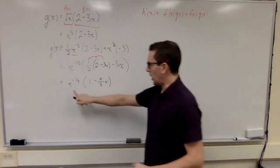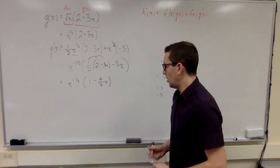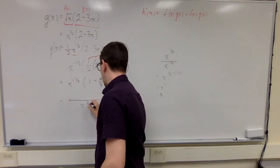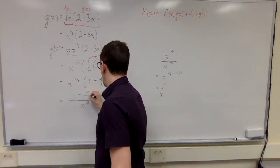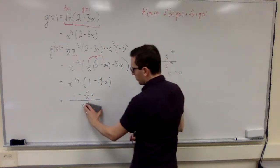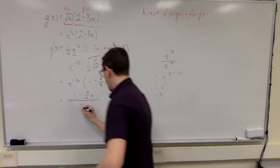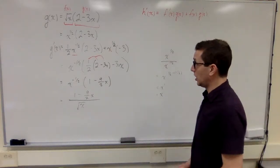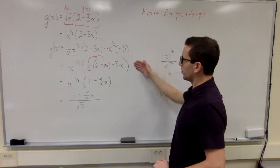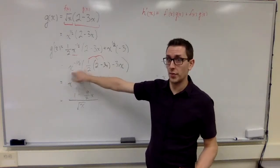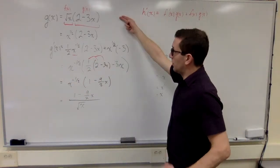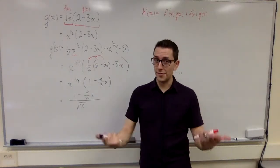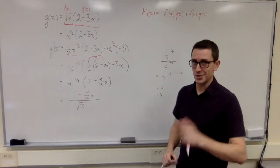We're getting closer to being really simplified. I don't like negative exponents or fractional exponents, so I'll apply the rule for negative exponents: x to the positive half moves to the denominator, leaving one minus nine over two x in the numerator. I can also rewrite x to the half as root x. At this point, this is simplified enough for any teacher teaching the product rule for derivatives. We've successfully applied the product rule to find the derivative. Let me know in the comments if you have questions — we'll cover examples of the quotient rule and chain rule as well. Thanks for watching.